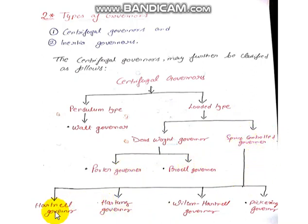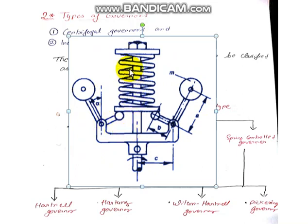The spring control governors include the Hartnell governor, the Hartung governor, the Wilson-Hartnell governor, and the Pickering governor. All are similar with some changes in spring compression or tension, which changes their names. The Hartnell governor is spring-loaded, and we will discuss each governor in detail, understanding its derivation, when we cover it in upcoming lectures.